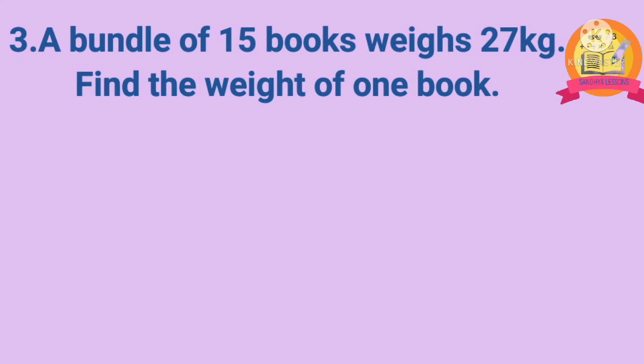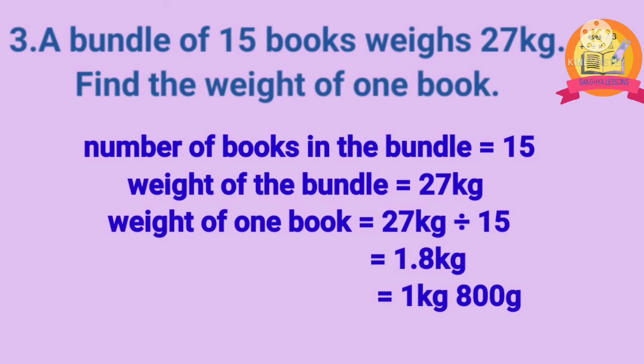Third problem: a bundle of 15 books weighs 27 kg. Find the weight of one book. Solution: number of books in the bundle is 15. Weight of the bundle is 27 kg. Weight of one book is obtained by dividing 27 kg by 15. After dividing, we get 1 kg 800 grams. Therefore, weight of one book is equal to 1 kg 800 grams.